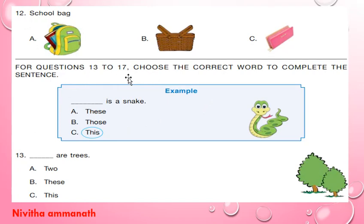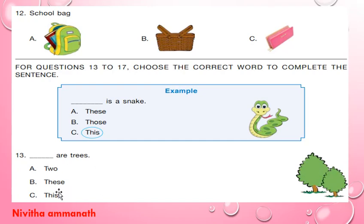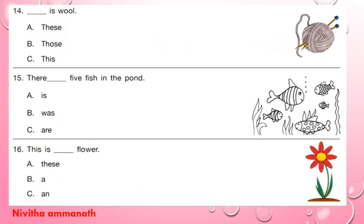For questions 13 to 17, choose the correct word to complete the sentence. For example, dash is a snake — these, those, this. This is a snake; these and those are plural, so this is a snake. Dash are trees — these, those, this. These are trees. Next, dash is wool — this is singular, so this is wool.